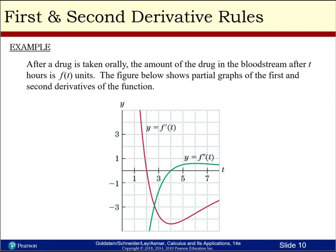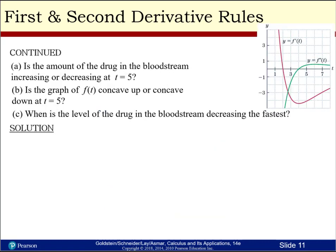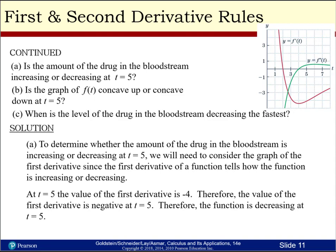After a drug is taken orally, the amount of drug in the bloodstream after t hours is f of t units. The figure shows partial graphs of the first and second derivatives. To determine whether the amount of drug is increasing or decreasing at t equal 5, we consider the first derivative. At t equal 5, the value of the first derivative is negative 4, so it is negative at t equal 5 and therefore the function is decreasing.